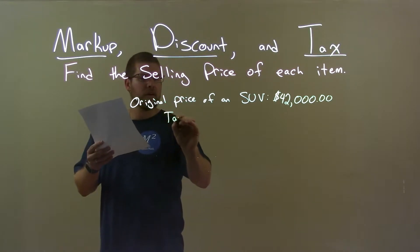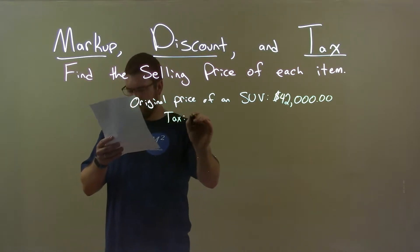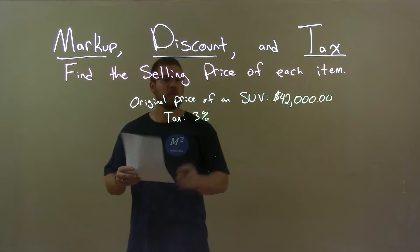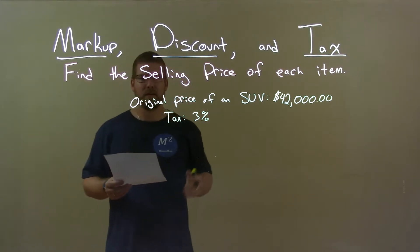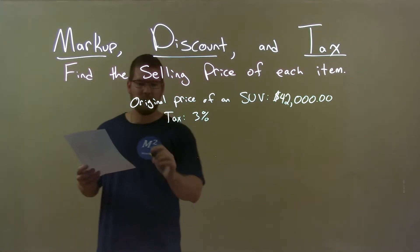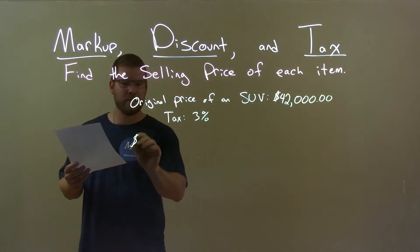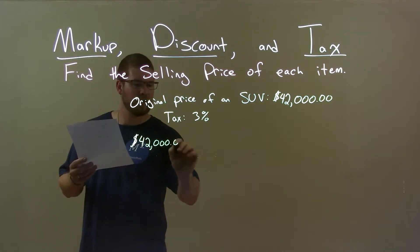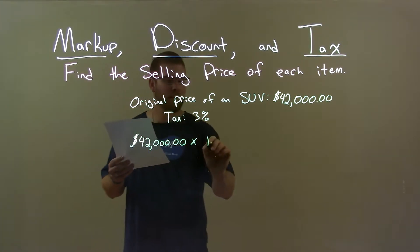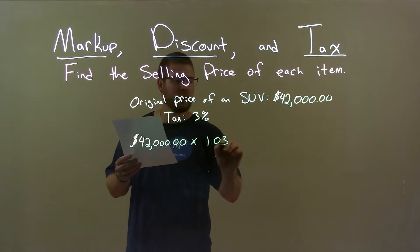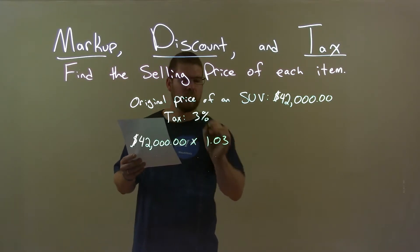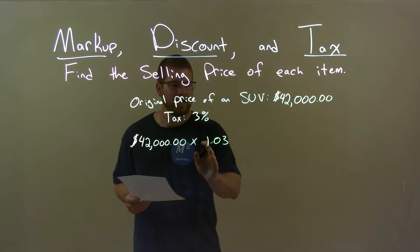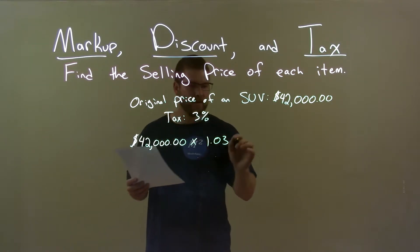We have a tax here of 3% — that's better than my state. So 3% tax. To get this calculation of your final price, we take the $42,000 and multiply that by 1.03. The 0.03 represents the 3% tax, and the 1 represents the original price.